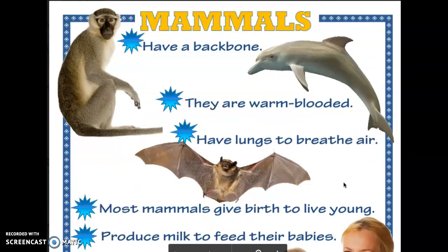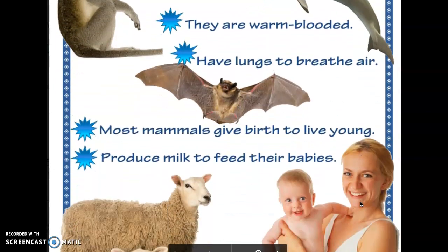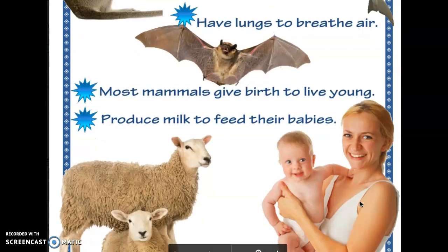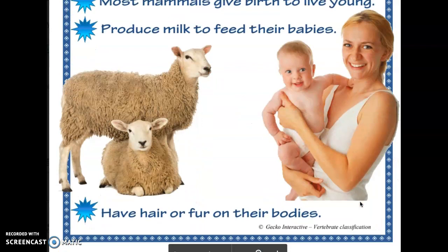Mammals have a backbone, are warm-blooded, have lungs to breathe air, most mammals give birth to live young, and produce milk to feed their babies. They also have hair or fur on their bodies.